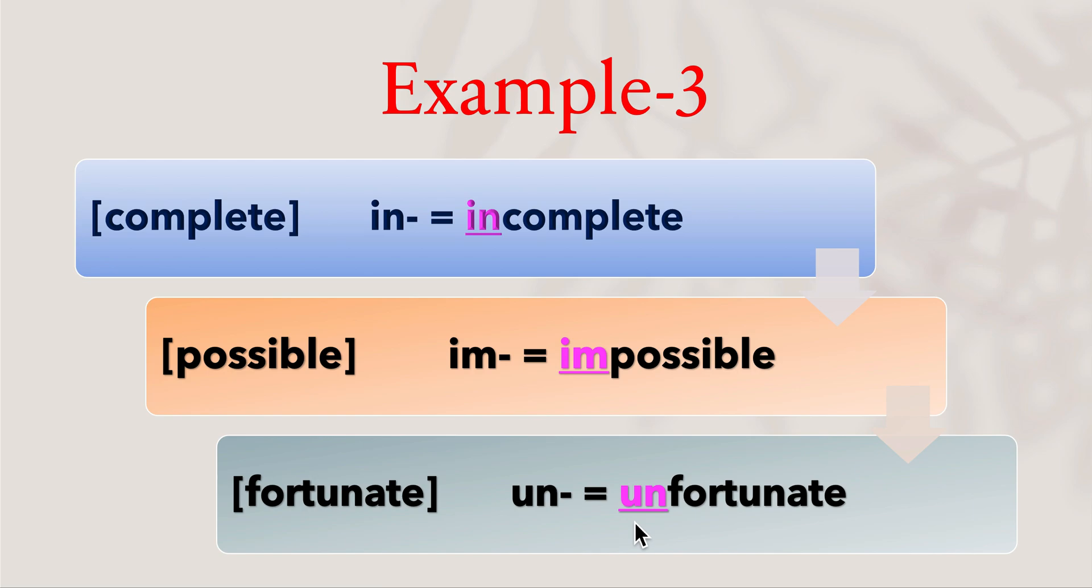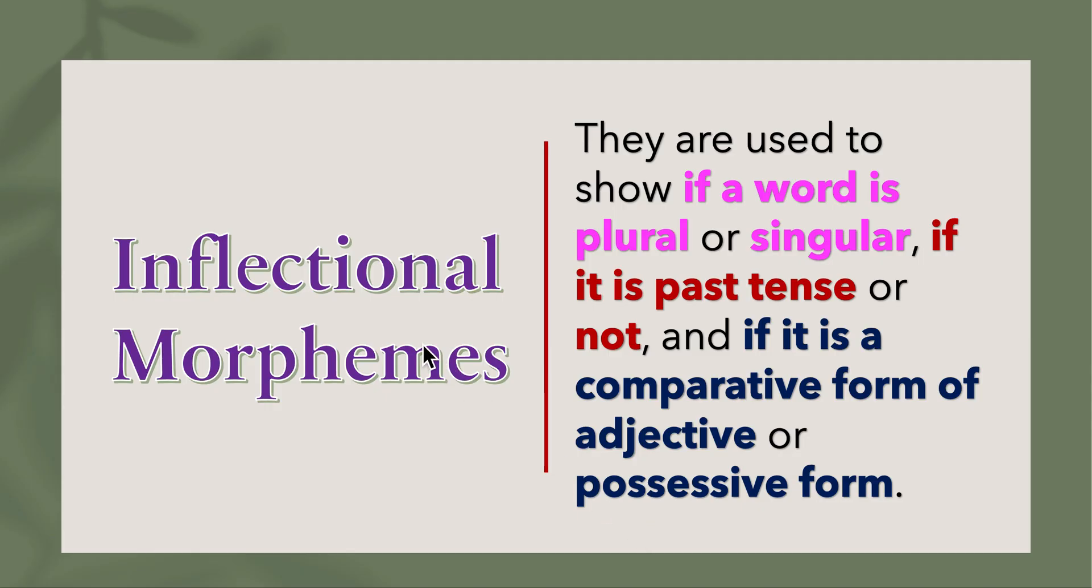Unfortunate: 'un-' is a derivational morpheme. Inflectional morphemes are used to show if a word is plural or singular, if it is past tense or not, and if it is a comparative form of adjective or possessive form.